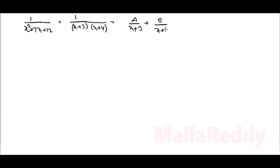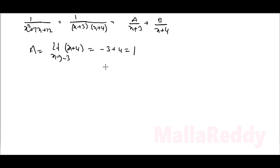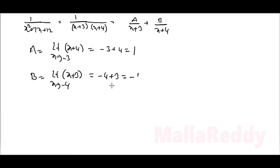We find the value of A: limit x tends to minus 3, take the function 1 by (x+4). Substituting: minus 3 plus 4 equals 1, so A equals 1. B is equal to limit x tends to minus 4, giving (x+3) equals minus 4 plus 3 equals minus 1.